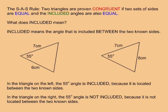In the triangle on the left, the 55 degree angle is included between the 6cm and 7cm sides. But in the triangle on the right, the 55 degree angle is not included between the 7cm and 6cm sides.